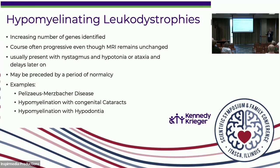Sometimes these kids look normal at birth and don't present until later. For example, Pelizaeus-Merzbacher disease — thought to be the most common hypomyelinating leukodystrophy — can present at birth with nystagmus, very low muscle tone, and floppy babies who are not feeding. But we also have patients with Pelizaeus-Merzbacher disease who look good for the first year or two of life, then show delays, spasticity, and seizures — sometimes misdiagnosed as cerebral palsy and not diagnosed until teenage years.